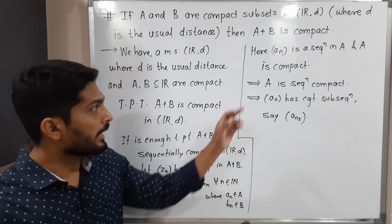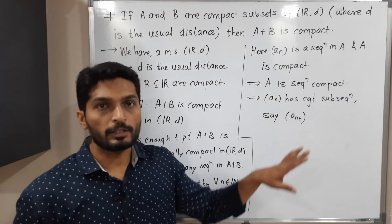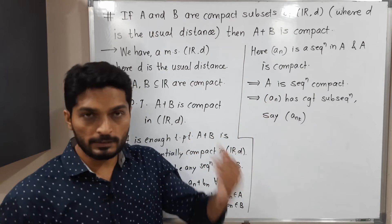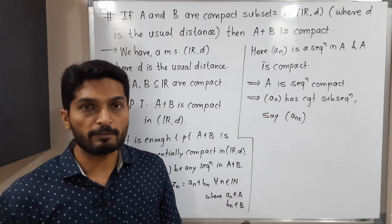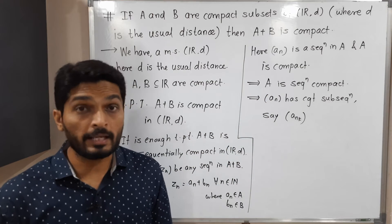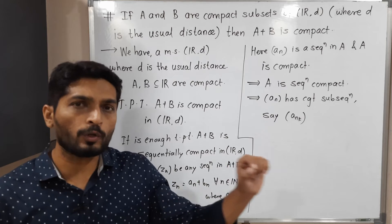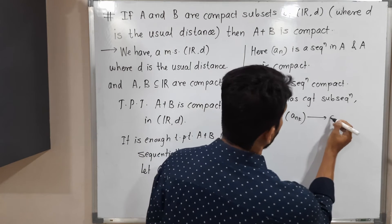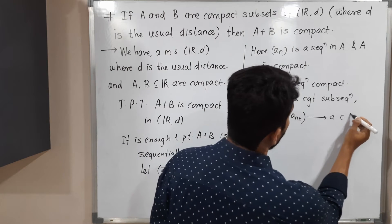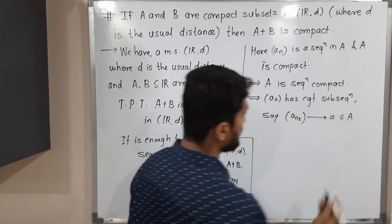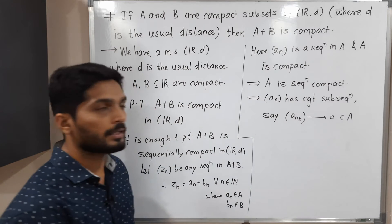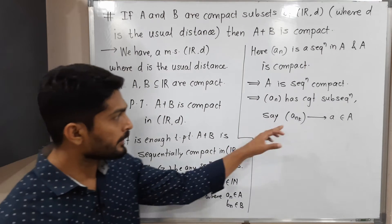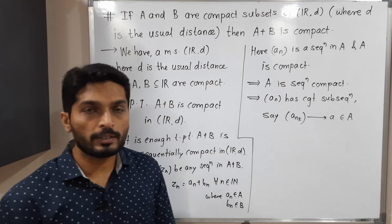A is sequentially compact, so aₙ has a convergent subsequence aₙₖ, and it converges to some point — let us call it a. Since the sequence is convergent in A, the limit a belongs to capital A. This is an important result we have obtained.